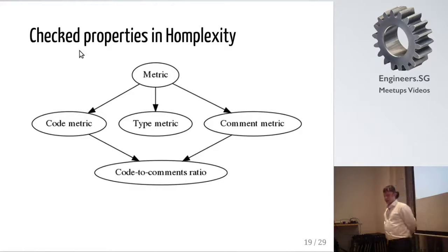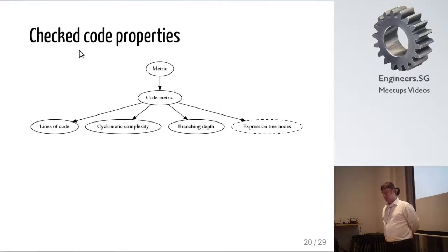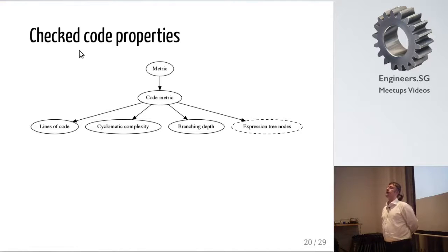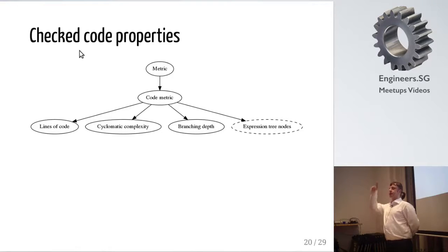The most important comment metric is the code-to-comments ratio — which is actually mixed with a code metric. This is only partially implemented now, but coming soon. For code metrics, we measure first lines of code, then cyclomatic complexity — how many different paths are in each function, how many different ways conditions can be satisfied. For example, if you have a function that just adds two numbers, cyclomatic complexity is one. If you have an if, it's two because you have the then arm and else arm.